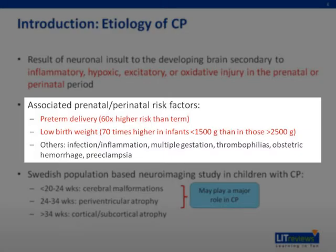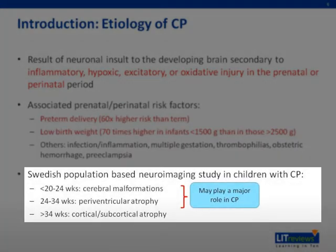Other less significant risk factors also include infection, inflammation, multiple gestation, thrombophilia, obstetric hemorrhage, and preeclampsia. A Swedish population-based neuroimaging study in children with cerebral palsy showed that cerebral malformations originate no later than 20 to 24 weeks gestation. Periventricular atrophy occurs between 24 and 34 weeks gestation, and cortical subcortical atrophy occurs after 34 weeks. It is possible that silent early third trimester PVL lesions and late third trimester cortical lesions may play a major role in cerebral palsy.